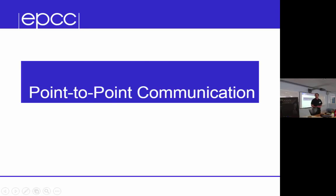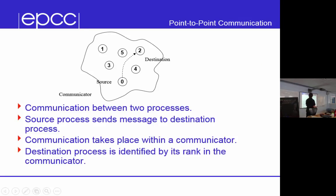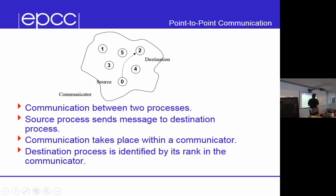Point-to-point communication: we're actually going to send some messages. Point-to-point communication is communication between two processes — a source process sends a message to a destination process. In MPI, the destination is specified by its rank. If size is n, you know all ranks are identified by a unique integer between 0 and n minus 1. Every communication within MPI takes place within a communicator.